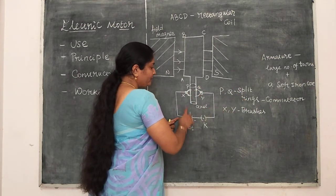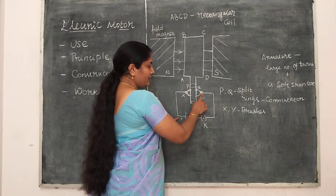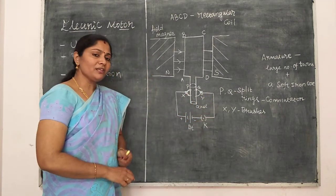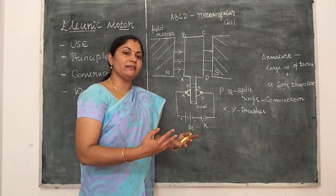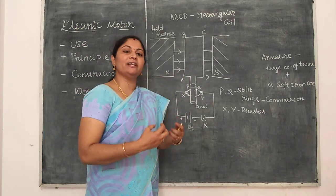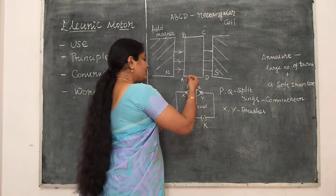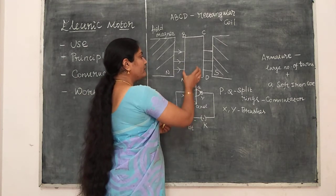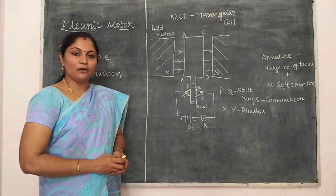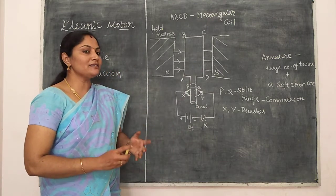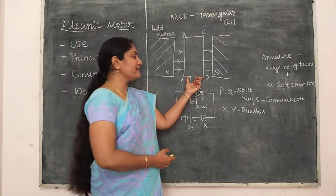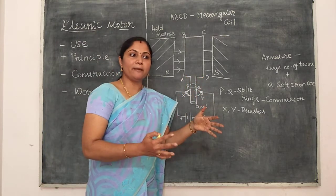The ends of the brushes are connected with the battery and key system, which provides electrical energy to the electric motor. With this electrical energy, we can produce a rotational effect in the rectangular coil.